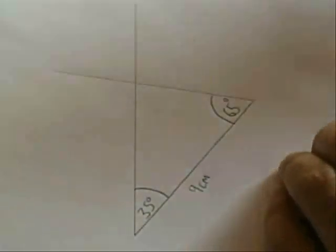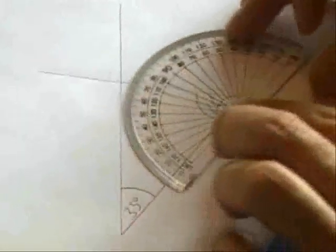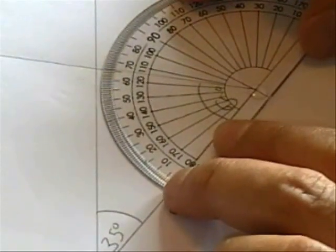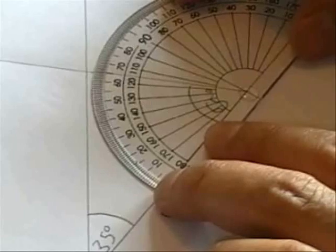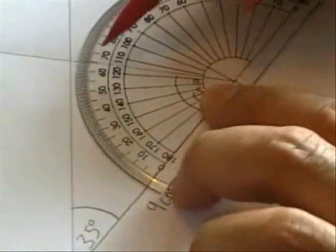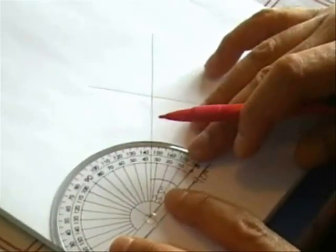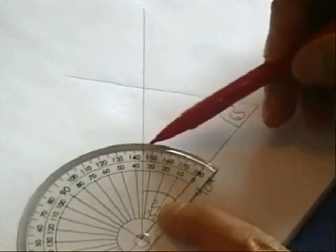And of course, as a good mathematician, I need to check that I've actually measured this correctly. So looking at this one here, we have 65 degrees. And going back to this one here, I have 35 degrees.